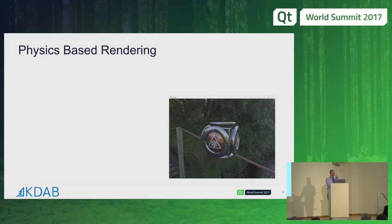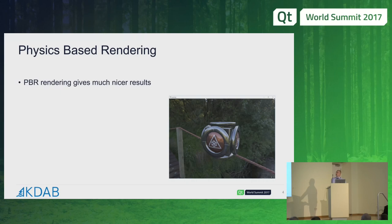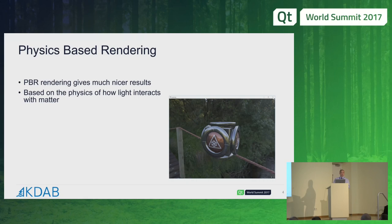One of the highlight features for me in 5.9 was the incorporation of the physics-based rendering shaders. These are much nicer than the old Phong-based shaders that we had before, and much easier to control as well. The shaders now much more accurately model how light interacts with matter, and they can be controlled with intuitive properties such as base colour, how metallic a surface is, and how rough the surface is.